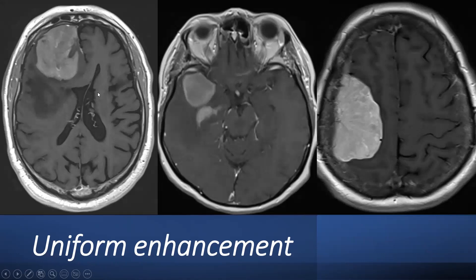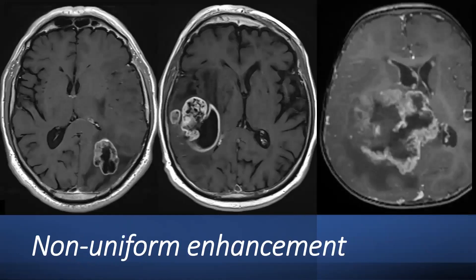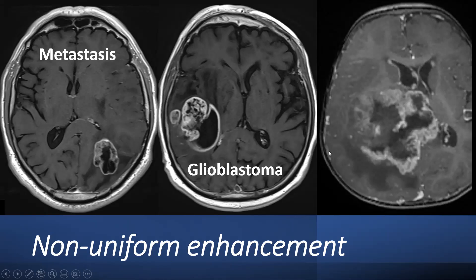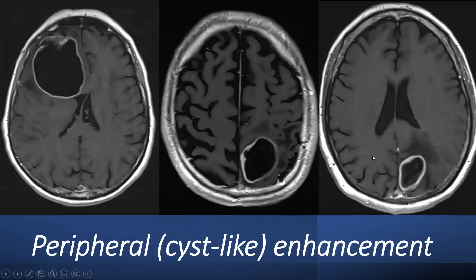Uniform enhancement is typically seen in CNS lymphoma and also in meningioma. Heterogeneous, non-uniform enhancement is more typically seen in very aggressive tumours that grow so fast the centre becomes necrotic — examples include metastasis and glioblastoma. In children, a central necrotic tumour should also make you think of atypical teratoid rhabdoid tumours, other embryonal tumours, or anaplastic ependymomas — aggressive high-grade tumours should always be in the differential.